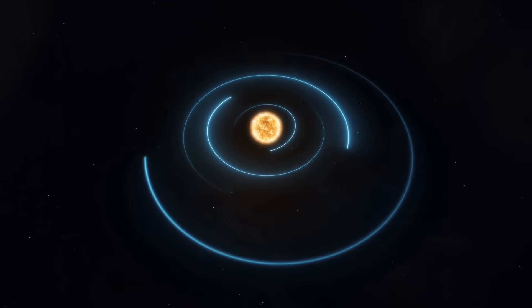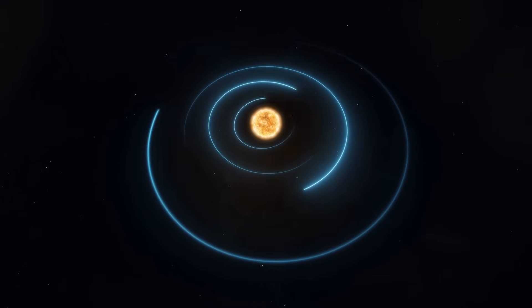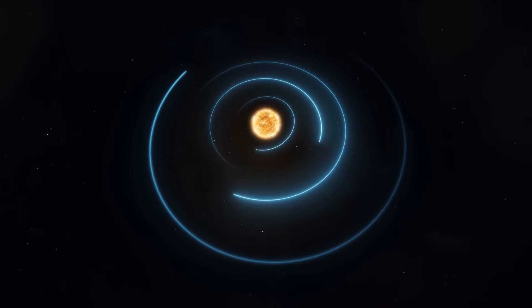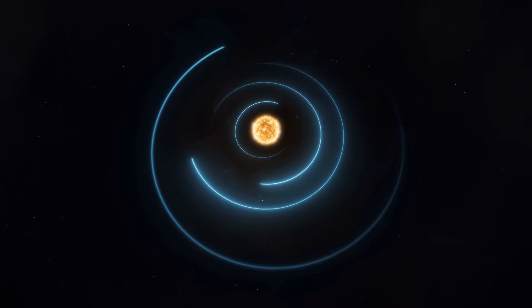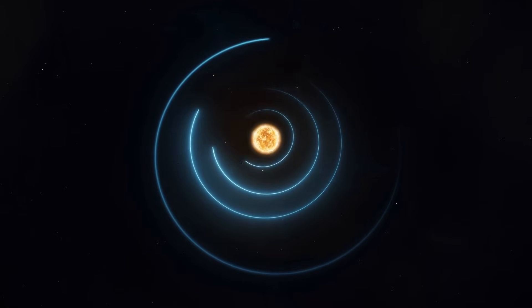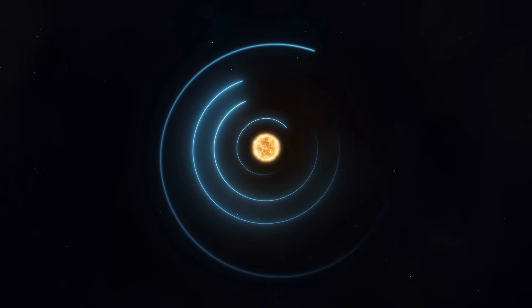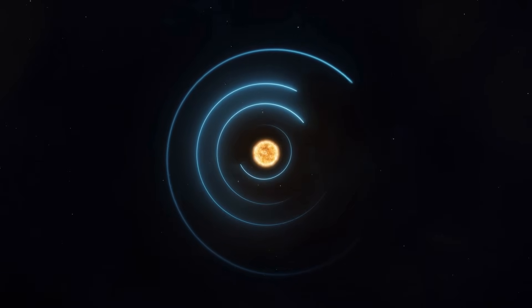What we gather now may be all we ever know, for the likelihood of another close pass is vanishingly small. Once it swings past the sun, it will accelerate outward, retracing its arc into the vast darkness. Unless some improbable gravitational interaction alters its course, 3i Atlas will vanish back into interstellar space, perhaps forever.